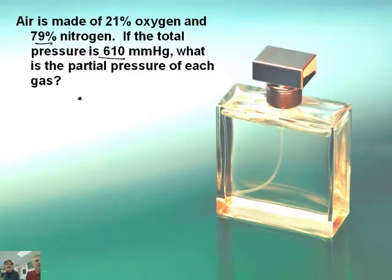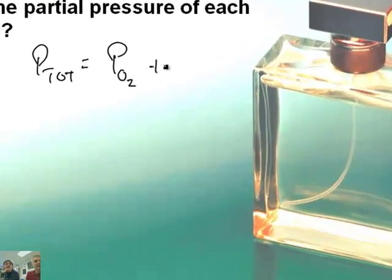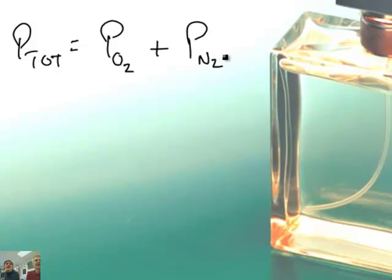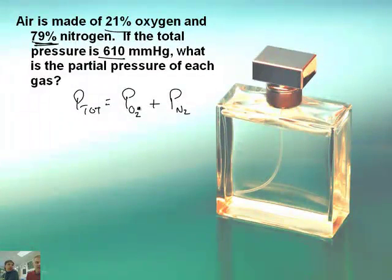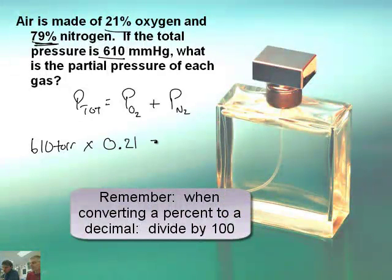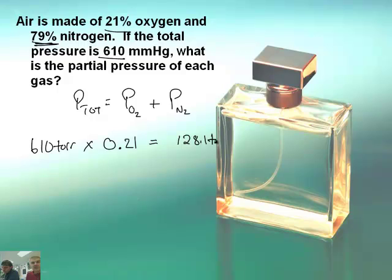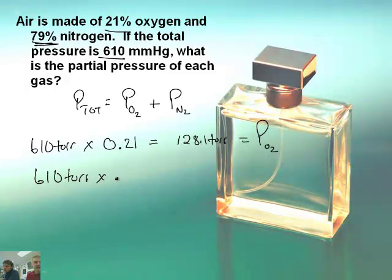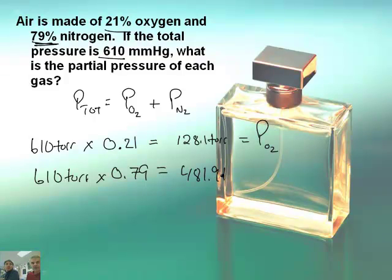We've got the total and that equation: P total equals the pressure of O₂ plus the pressure of N₂. But I can't really add them directly because I just have percentages. So let's take 21% of 610 and then 79% of 610. Because if I've got 610 torr and I multiply it by 21% — that's 0.21 as a decimal — we get 128.1 torr. That's the pressure being exerted by oxygen.